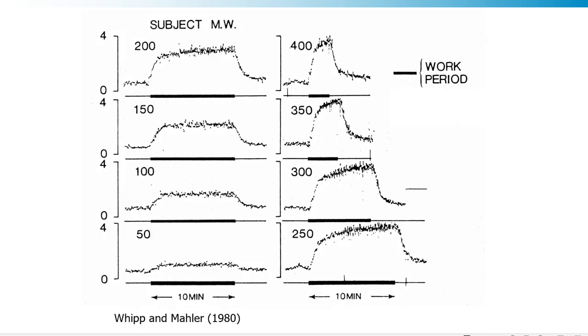In 1972, Whipp and Wasserman performed probably the seminal study on this, where they actually looked at various different exercise intensities and looked at the VO2 response. And Whipp and Mahler in 1980 summarised this, and you can see steady states for this participant at 50 watts, 100 watts, and 150 watts. This is a particularly fit participant. But at 200 watts, there is a delayed attainment of a steady state. Even more delayed at 250, arguably no steady state whatsoever at 300, 350, and 400. Something is changing compared to what happens during moderate intensity exercise.